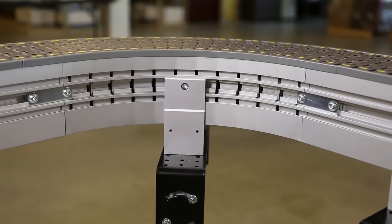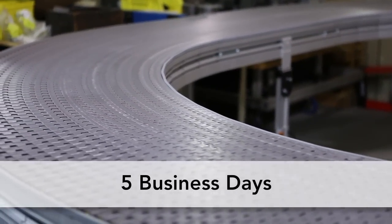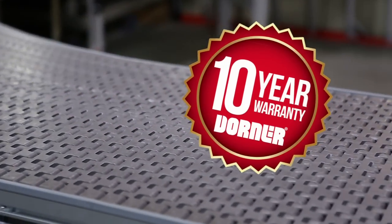Consistent with Dorner's industry best lead times, 3200 series conveyors ship in just 5 business days. Dorner conveyors also come standard with the peace of mind of the Dorner 10-year warranty.